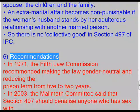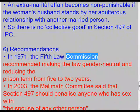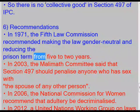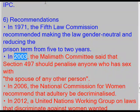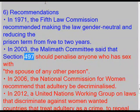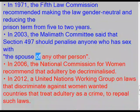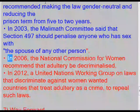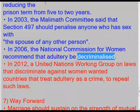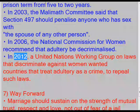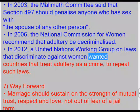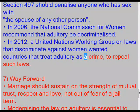Recommendations: In 1971, the Fifth Law Commission recommended making the law gender-neutral and reducing the prison term from five to two years. In 2003, the Malimath Committee said that Section 497 should penalize anyone who has sex with the spouse of any other person. In 2006, the National Commission for Women recommended that adultery be decriminalized. In 2012, the United Nations Working Group on Laws that Discriminate Against Women urged countries that treat adultery as a crime to repeal such laws.